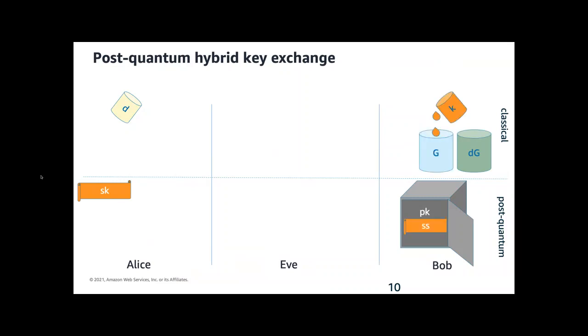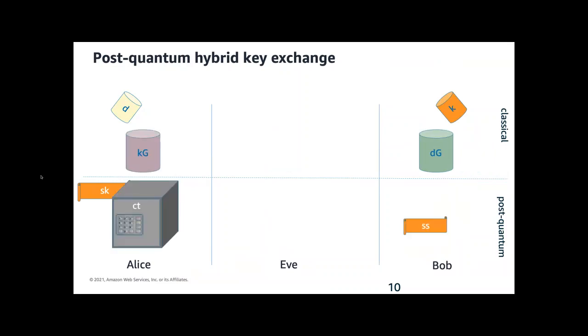Bob also starts with the same public can of paint, mixes in his secret color K, and starts the encapsulation mechanism to get a shared secret. He completes the encapsulation to get a ciphertext, a new can of paint, and sends the sealed ciphertext and the can of paint back over to Alice.